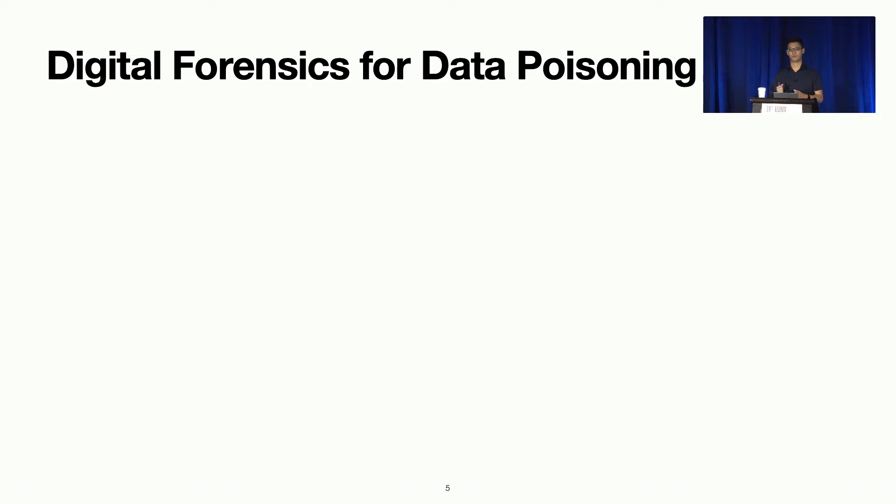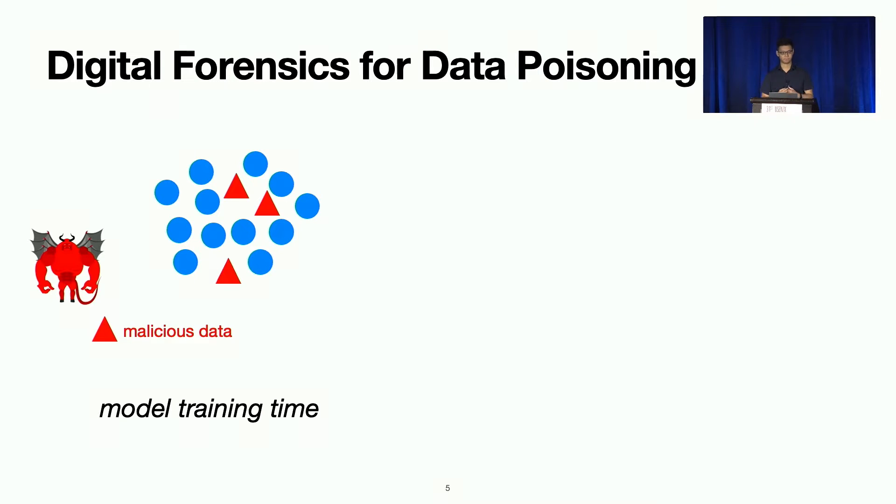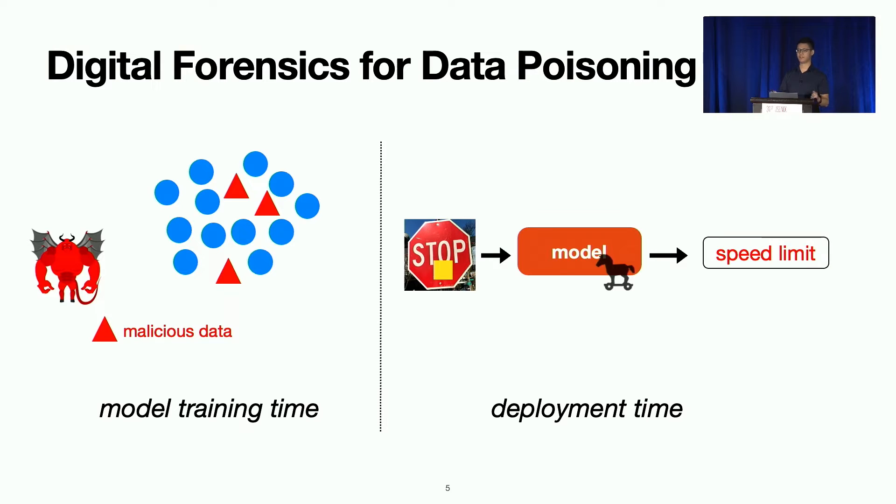And as an initial step, we took a look at data poisoning attack. A quick refresher on data poisoning attack. You are training a classifier, collecting a dataset. Attackers somehow go into your training data collection pipeline, inject some poison data. Now your model has a vulnerability because of these poison data. At test time, they can exploit this vulnerability and cause a misclassification. Very standard data poisoning attack scenario.